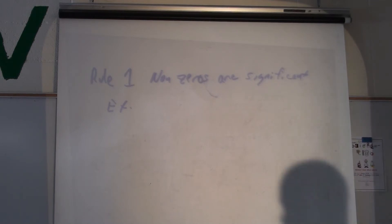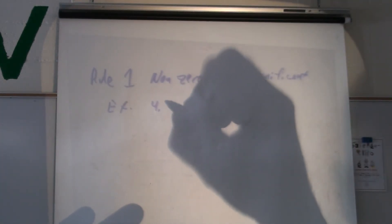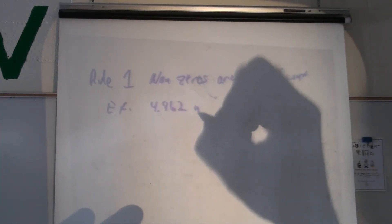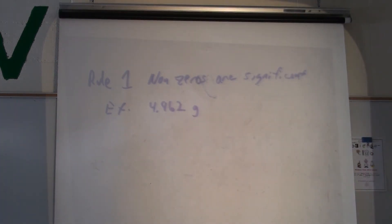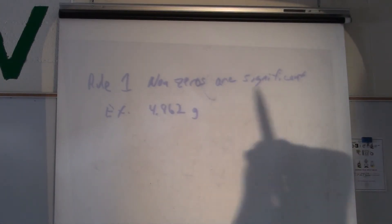and you need to weigh out some sodium chloride. You go out to the balance, you scoop it on there, and the balance tells you that it weighs 4.862 grams. So that's what the balance shows you. The balance is making the guess for you. So the 2 is the guess.